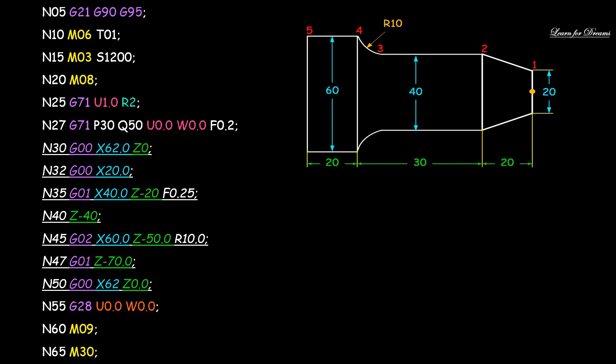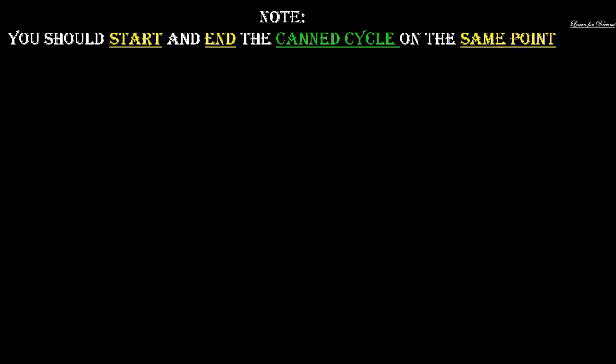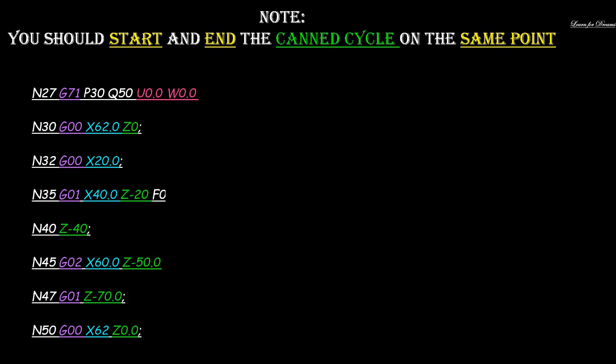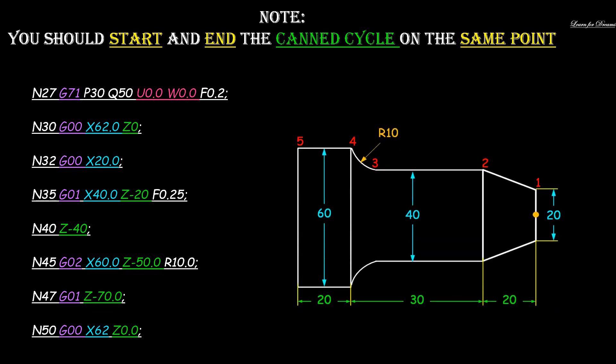So when using canned cycle, the thing to remember is that you should start and end the canned cycle on the same point. So this was our canned cycle, N30 to N50, and it starts at point P60 zero and also ends at the same point P60 zero.